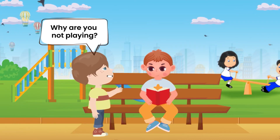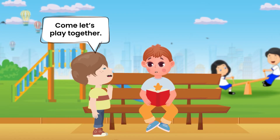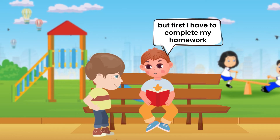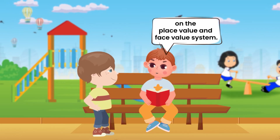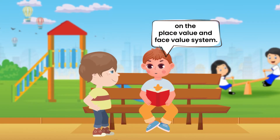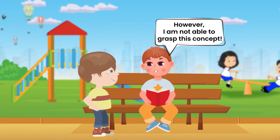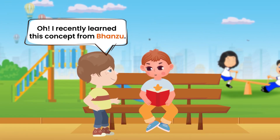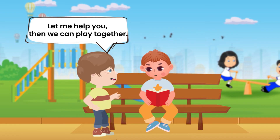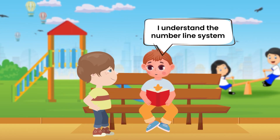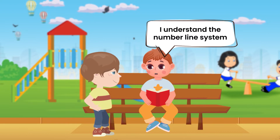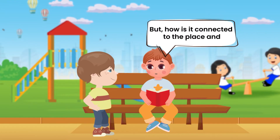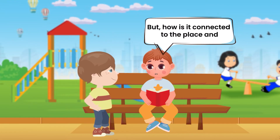Hey Peter, why are you not playing? Come, let's play together! I want to play, but first I have to complete my homework on the place value and face value system. However, I'm not able to grasp this concept. I recently learned this concept from Bhanzu — let me help you, then we can play together. Thanks John! I understand the number line system and I also understand why 9 comes before 10, but how is it connected to the place and face value of numbers?